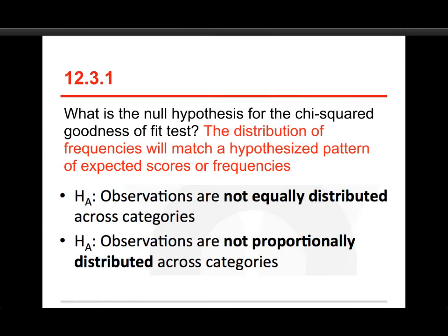And again, here are the two hypotheses copied directly from the presentation, and you can say these are the two versions of the alternative hypothesis, and they're either not equally distributed or they're not proportionally distributed, and that's the one that we're emphasizing right here.